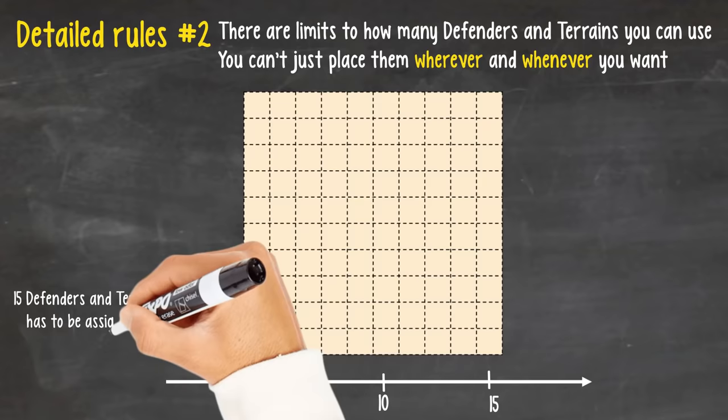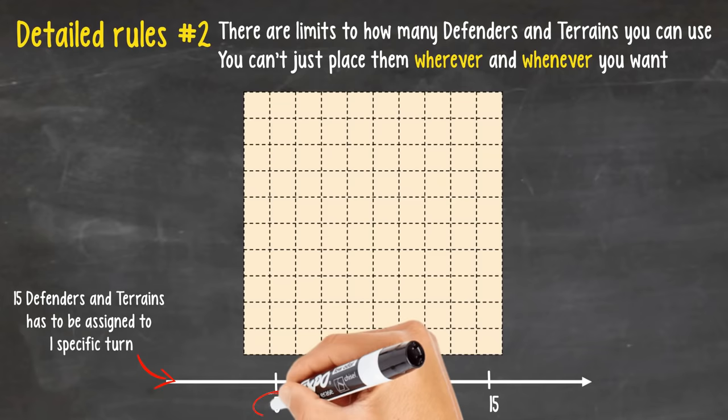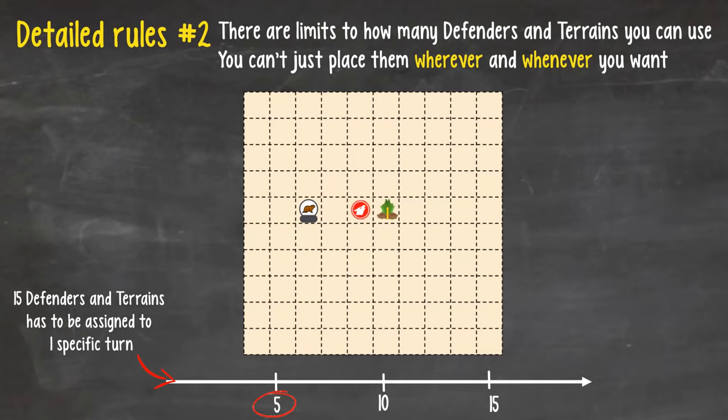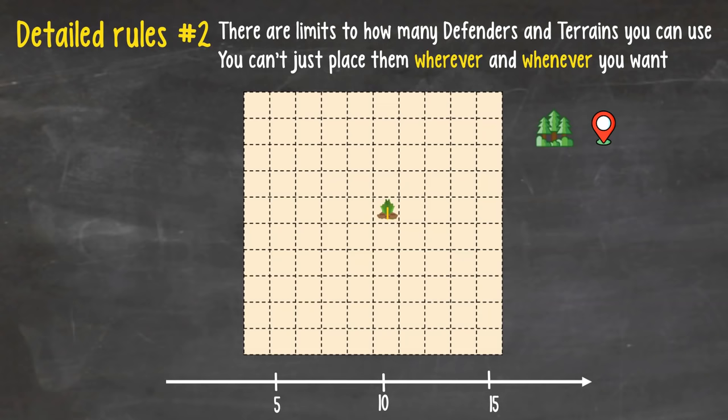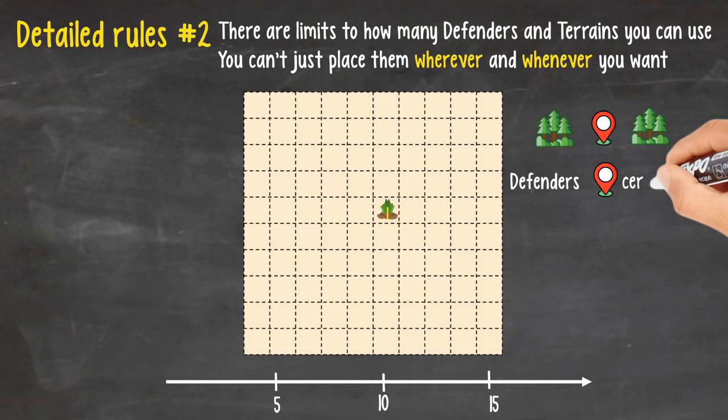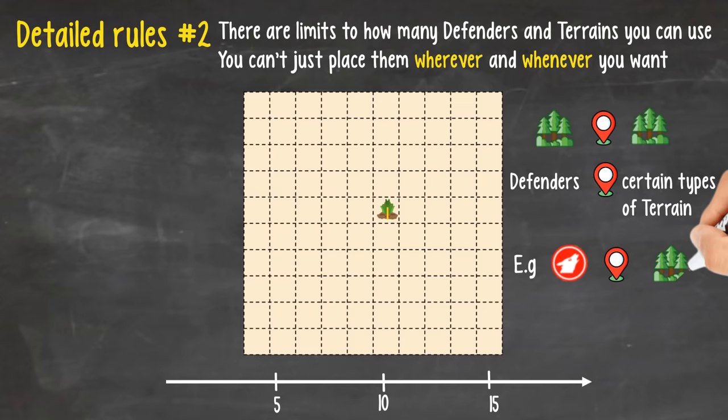Here's the second twist. There are limits to how many defenders and terrains you can use, and you cannot just place them wherever and whenever you want. Each of the 15 defenders and terrains has to be assigned to one specific turn, and it only takes effect from that turn onward. So, for example, at turn 5, there's an invader stack only 2 squares away from your base. You place a wolf between the base and the invader stack to kill it, but assign that wolf to turn 9. The invader stack will just pass right through to your base without any resistance. And as I briefly mentioned before, each defender and terrain all have specific rules of placement. Most often, terrain can only be placed next to an existing terrain of the same type, and defenders must always be placed in certain types of terrain.